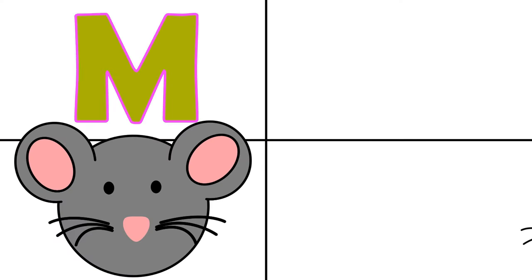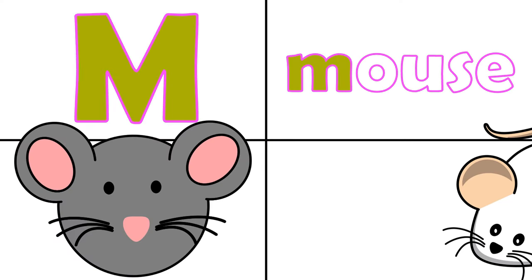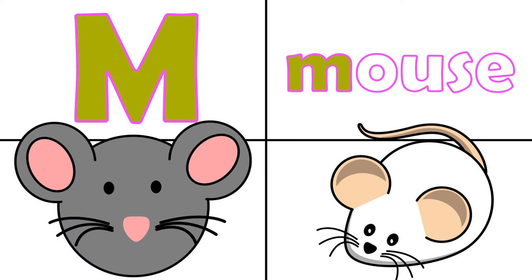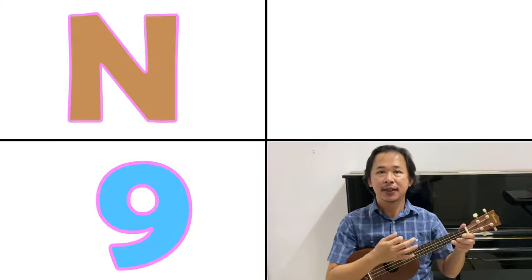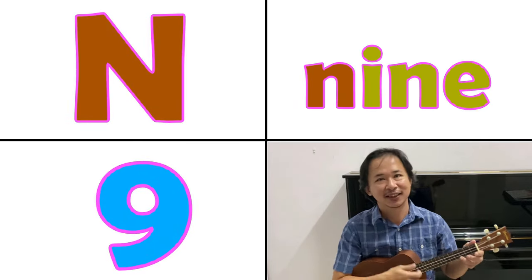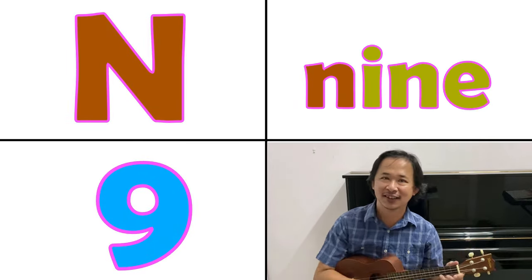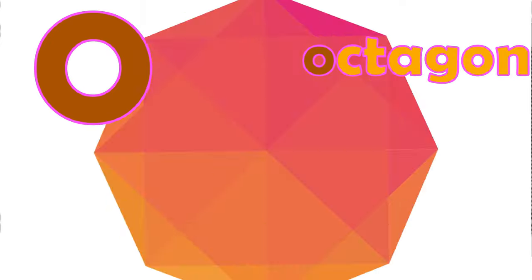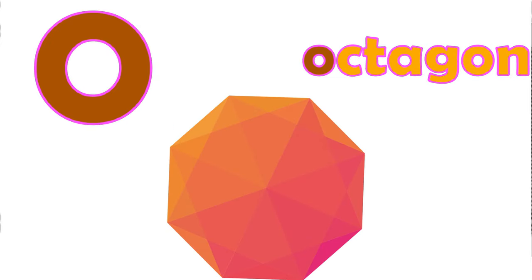M is for mouse, m. N is for nine, n. O is for octagon, r.